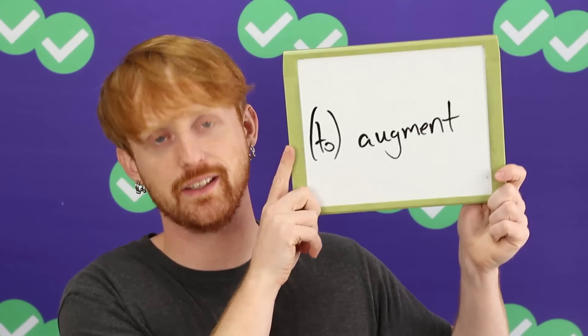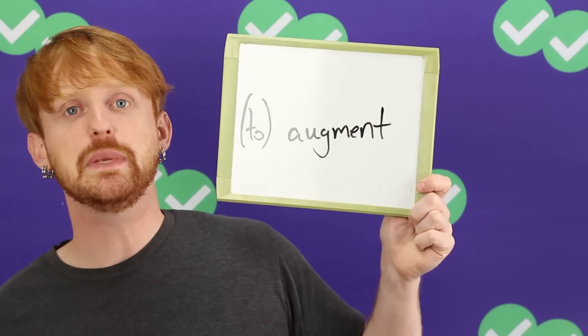Next: augment. Augment means to add to, but it's usually adding in a helpful way. For example, let's imagine a woman named Janine. Janine has a baby, and she is already working during the day, but now she needs more money because she has a child. So she gets a second job in the evening and works two jobs to augment her income — so that she can make more money to support and raise the child. So you can augment your income.